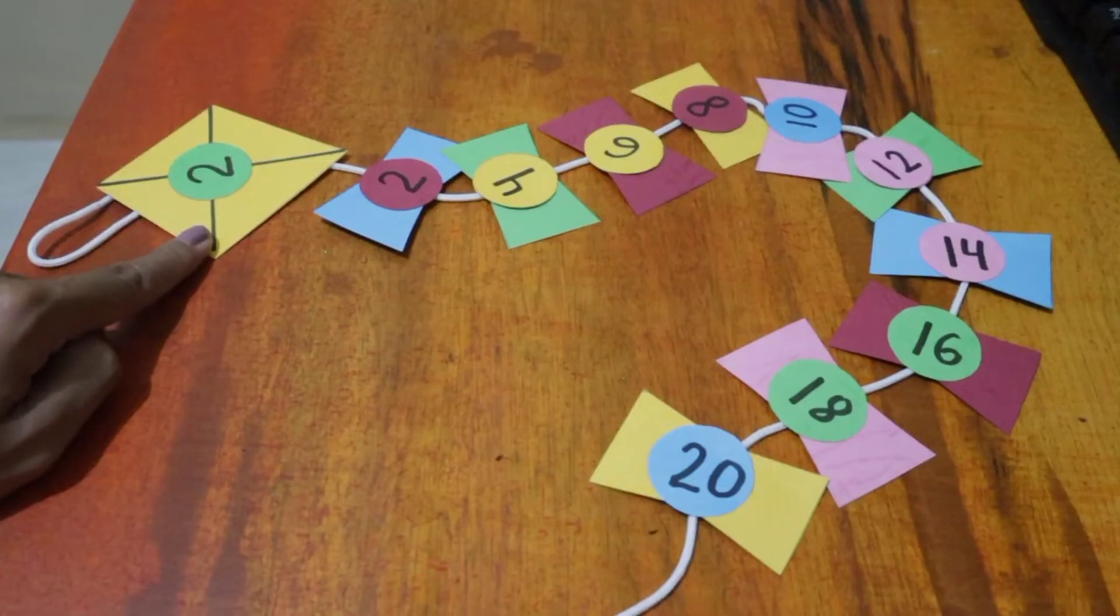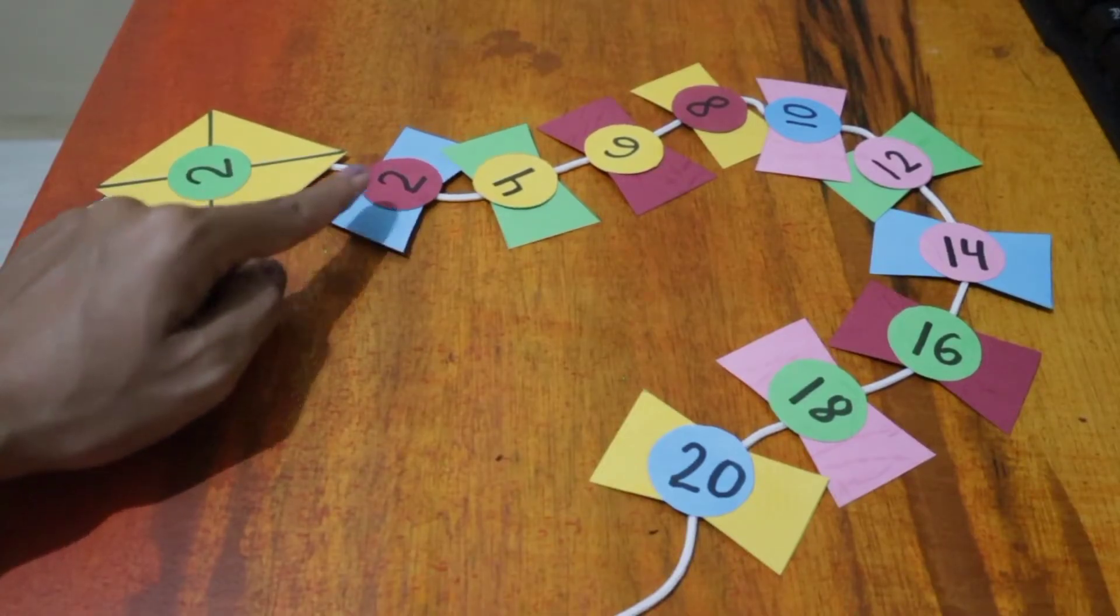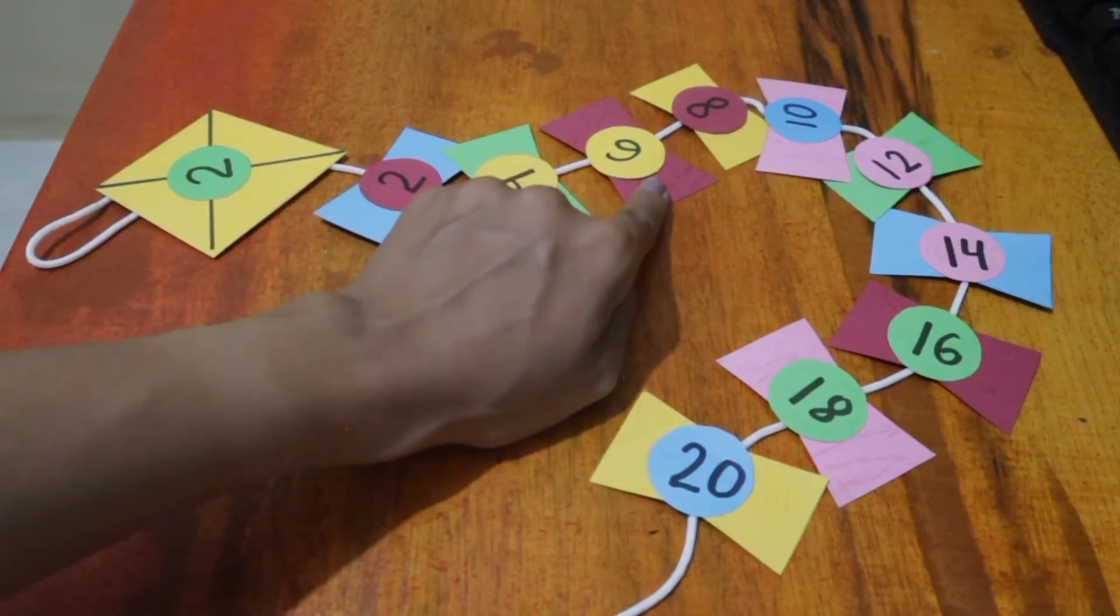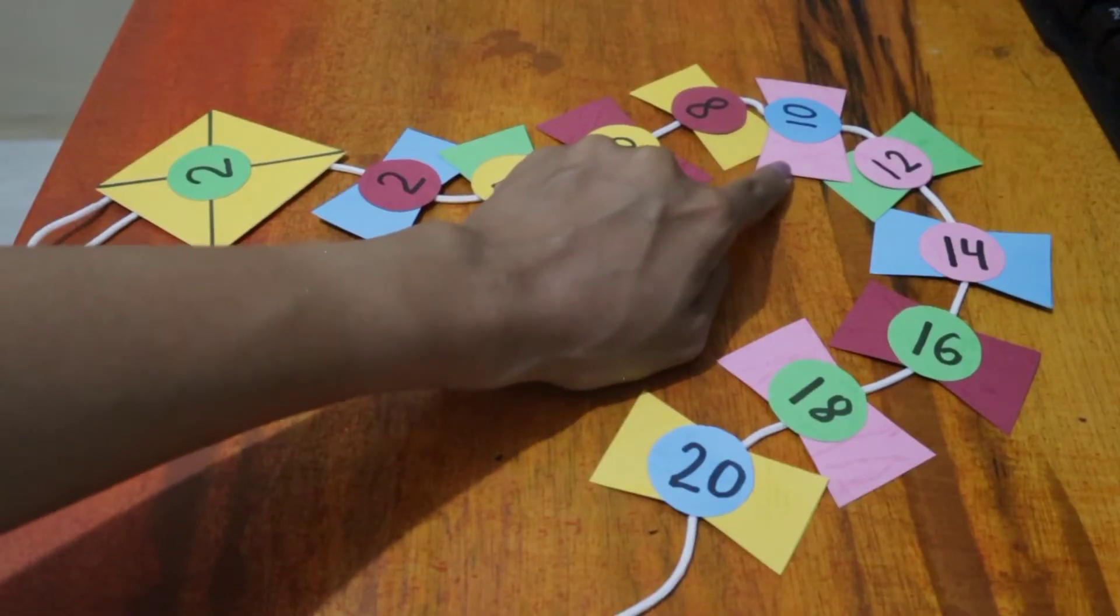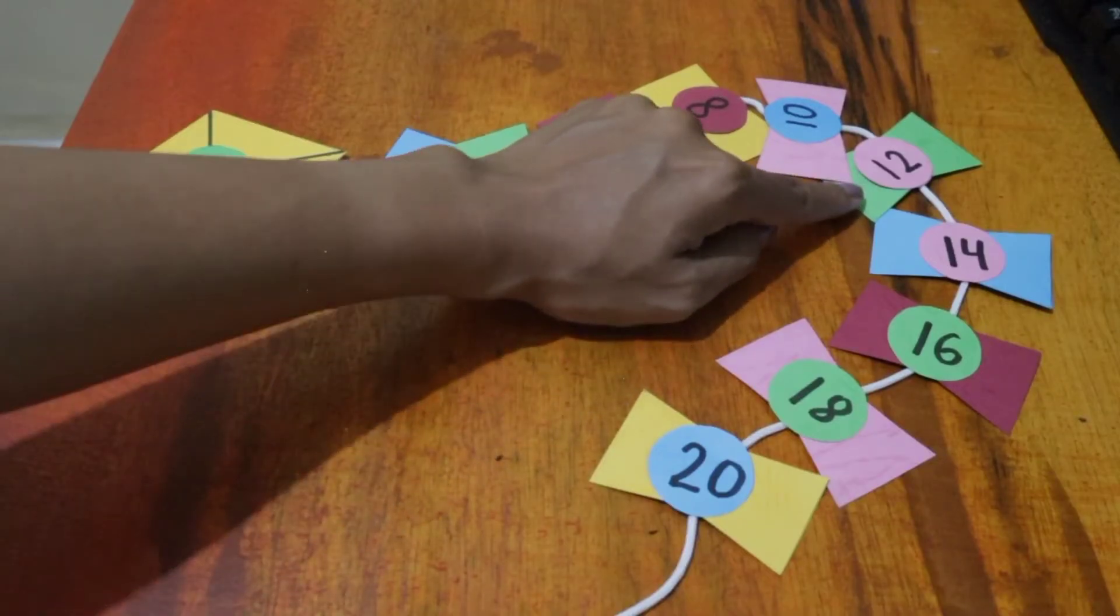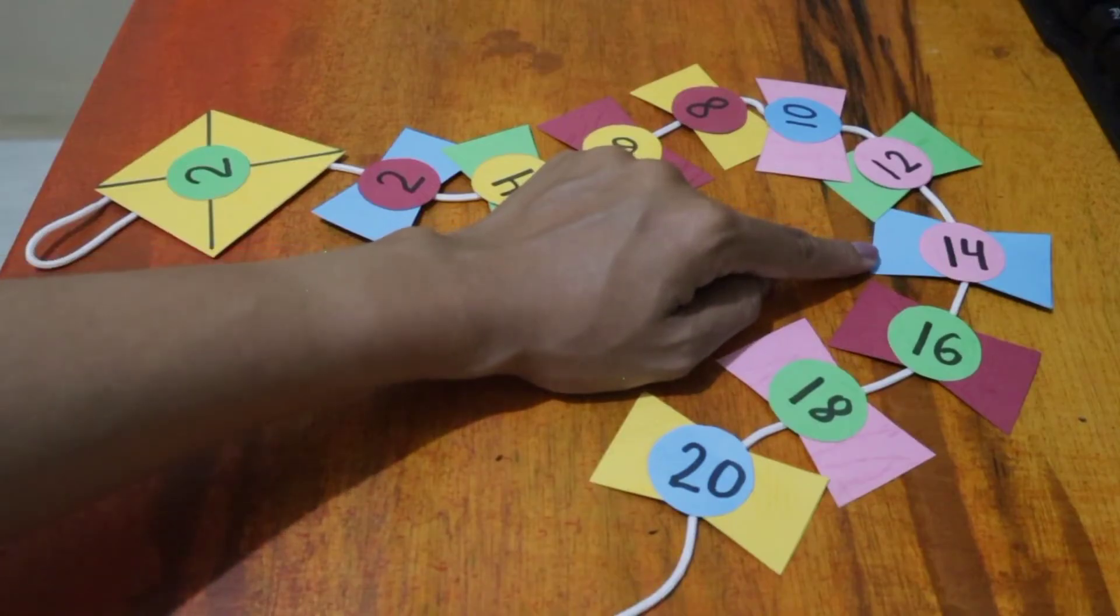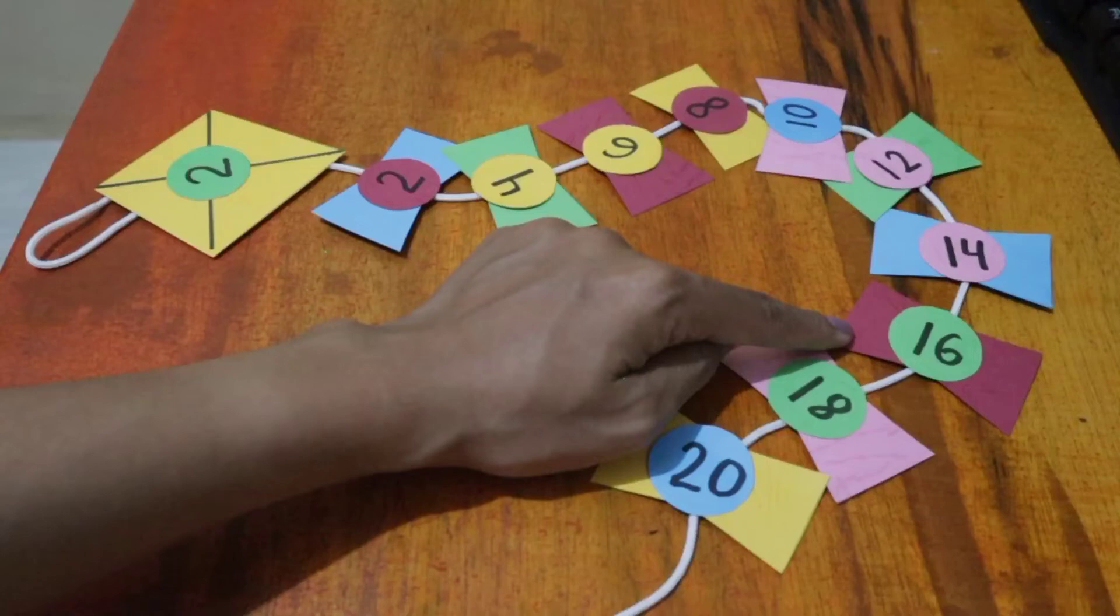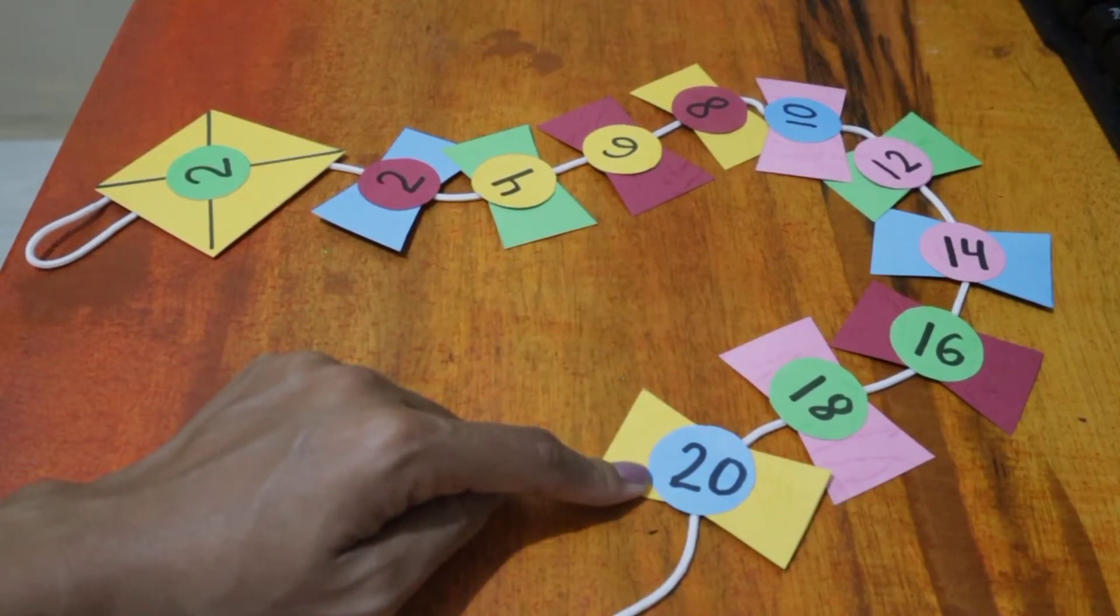1 times 2 is equal to 2, 2 times 2 is equal to 4, 3 times 2 is equal to 6, 4 times 2 is equal to 8, 5 times 2 is equal to 10, 6 times 2 is equal to 12, 7 times 2 is equal to 14, 8 times 2 is equal to 16, 9 times 2 is equal to 18, 10 times 2 is equal to 20.